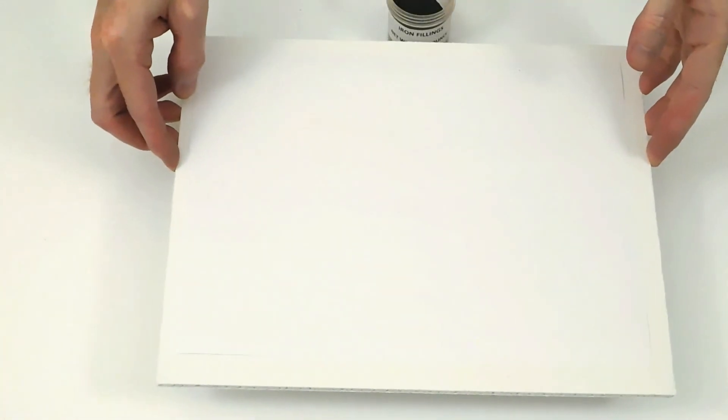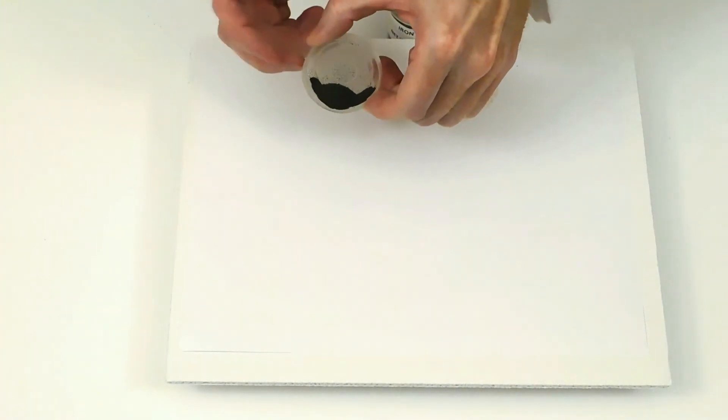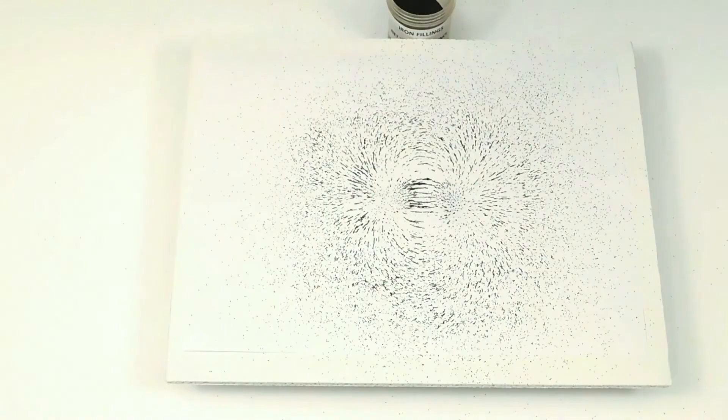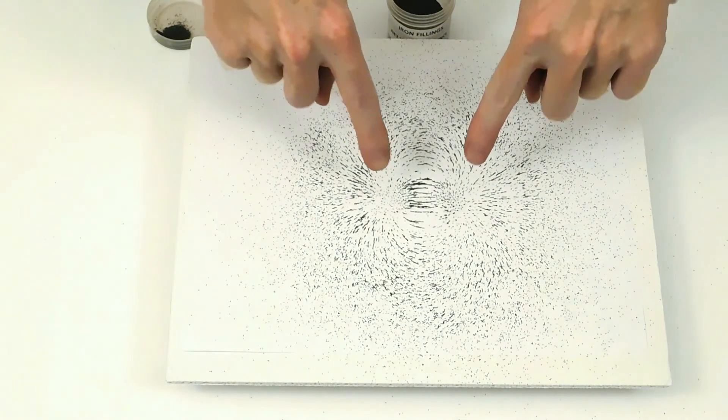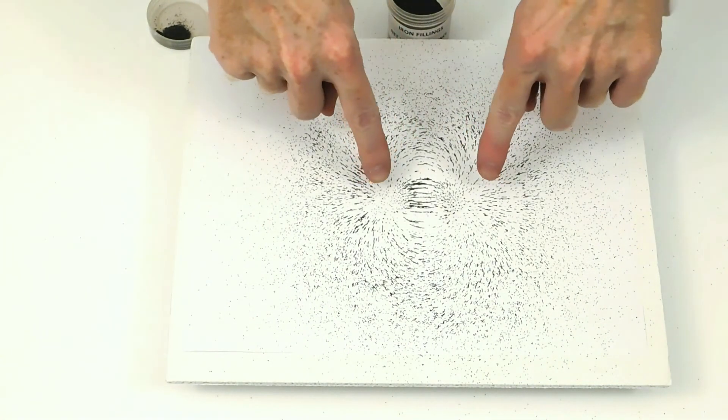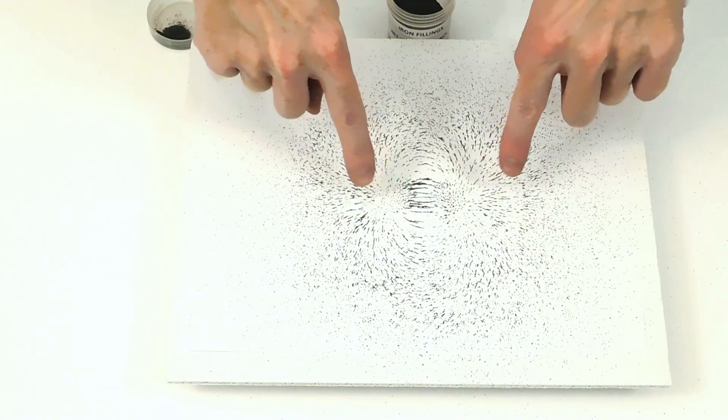Magnets exert their force through fields. We can see where some of the magnetic field is by putting a board over a magnet, then sprinkling tiny pieces of iron around it. The force is greatest near the magnet. These lines are called magnetic field lines. Using paper shows the magnetic fields in just two dimensions.